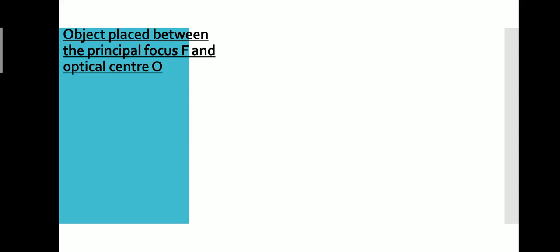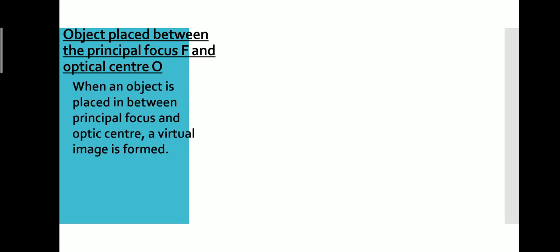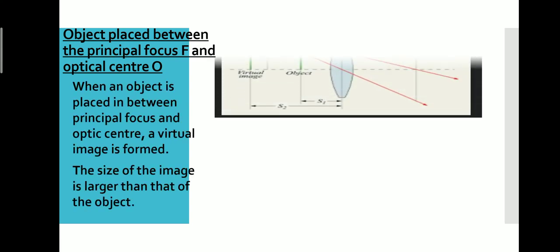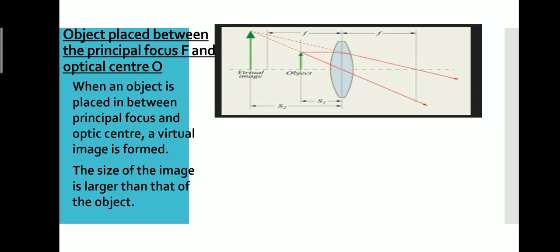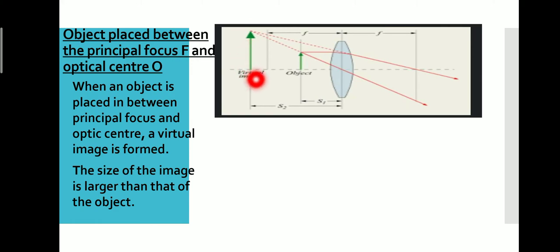Next is the object placed between the principal focus F and the optic center. The object is placed very close to the lens, between O and F. The image will be formed on the same side as the object. This is a virtual image, and the size of the image is larger than that of the object.